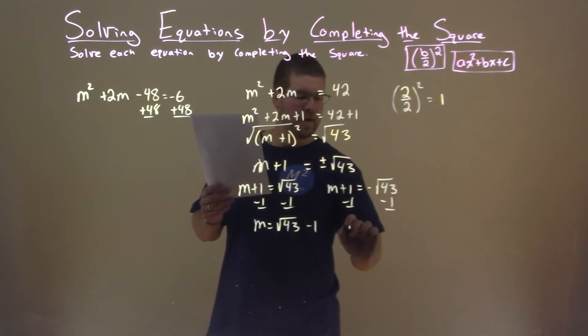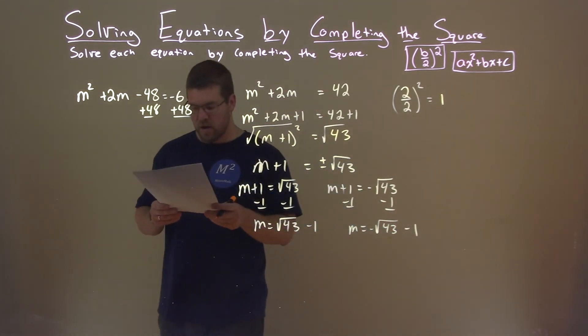Subtract 1 from both sides here, and m equals negative square root of 43 minus 1.